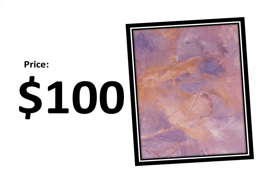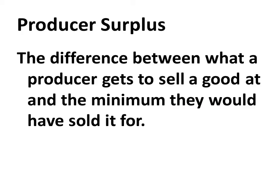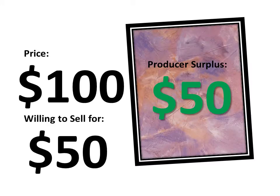And imagine she gets to sell this painting for $100. We think about what this painter has now, and this painter gets some producer surplus, that being the difference between what they sold the good at and the minimum they would have sold it for. So they're willing to sell it for $50, they were able to sell it for $100, so that's a $50 producer surplus, the difference between $100 and $50.